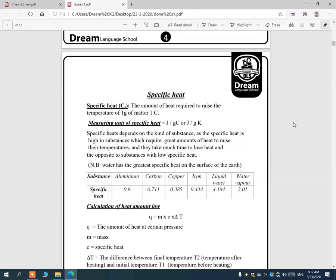Let's talk about another title which is specific heat. Specific heat is the amount of heat required to raise the temperature of 1 gram of matter 1 degree Celsius. Its measuring unit is joules per gram Celsius or joules per kilogram Celsius. Specific heat depends on the kind of substance. Substances with high specific heat require great amounts of heat to raise their temperatures and they take much time to lose the heat gained.